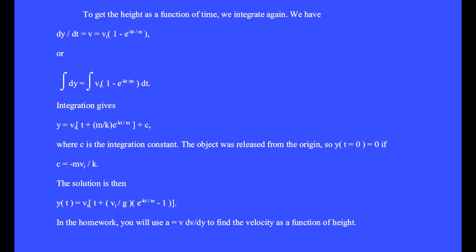The object was released from the origin, so y at t equals zero equals zero. This requires that c equals minus m times the terminal velocity over k. The solution is then y of t equals terminal velocity times t plus the terminal velocity over g times e to the minus kt over m minus 1.